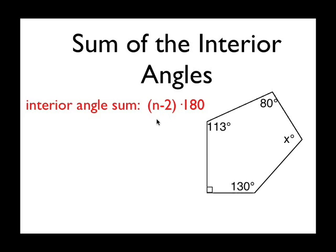Since there are five sides, we're going to do 5 minus 2 times 180, which is equal to 540.